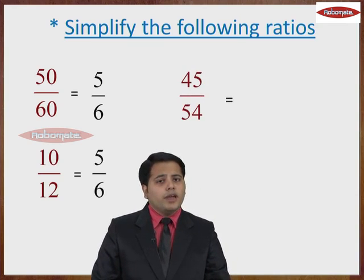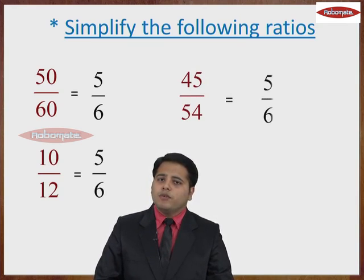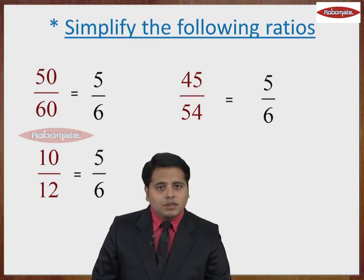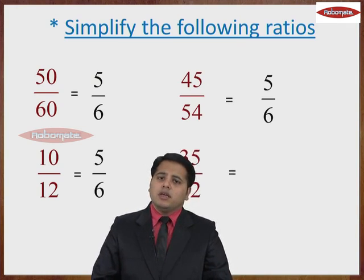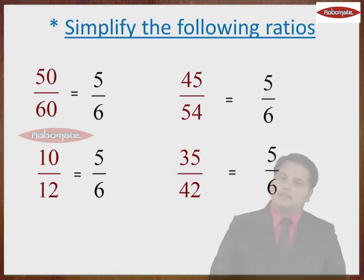Another ratio, 45 upon 54. Both come in 9's table. So when you cancel them, it would give you again 5 upon 6. Similarly, the fraction 35 upon 42 will again give you 5 upon 6.